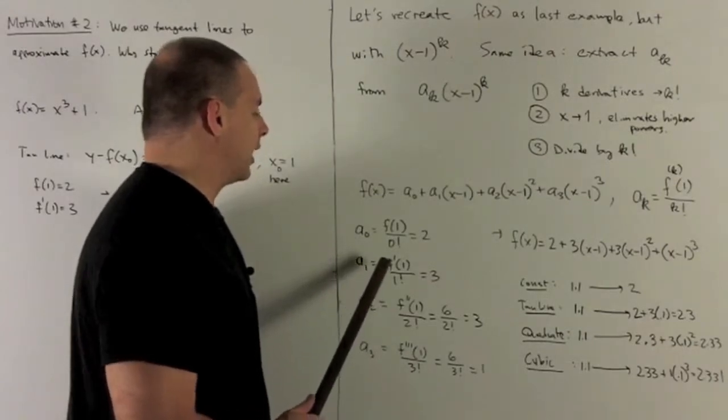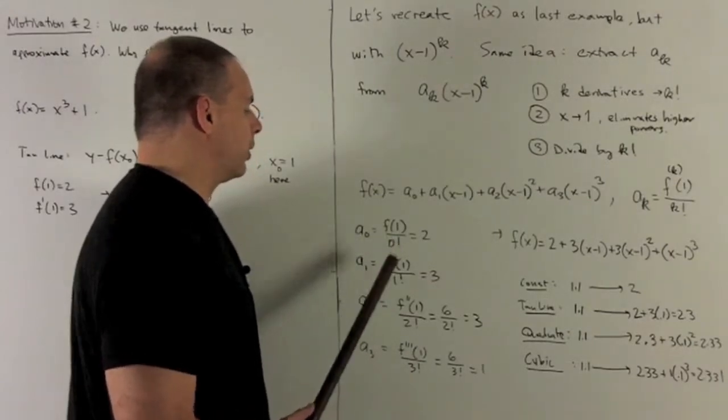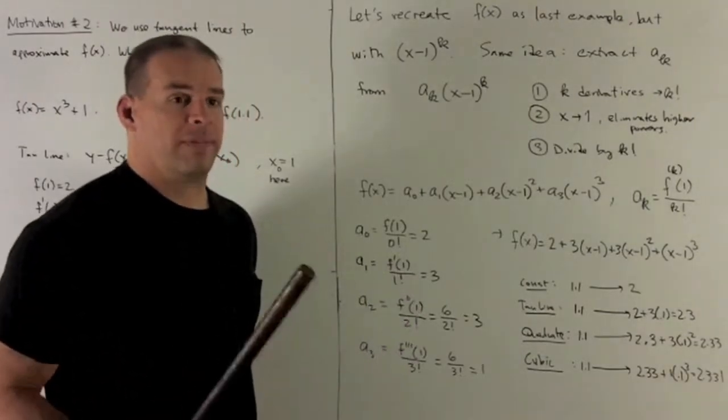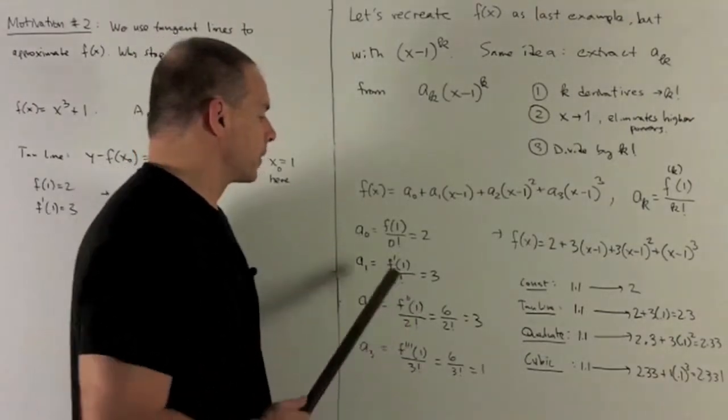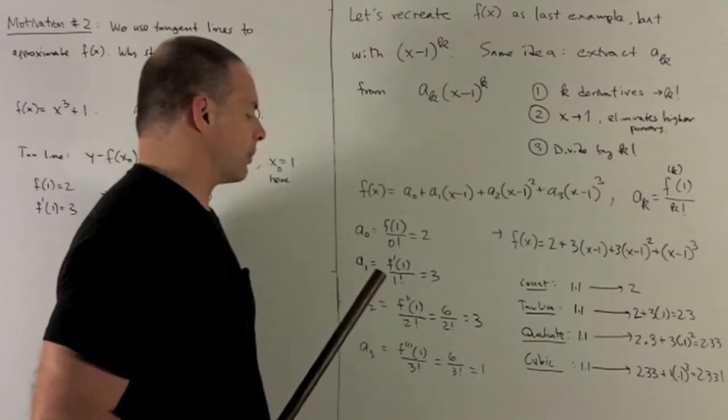a sub 1, same idea. We're going to take the first derivative, evaluate at 1, divide by 1 factorial. 1 factorial, by definition, is 1. So we'll get a 3, like I did in my last example.